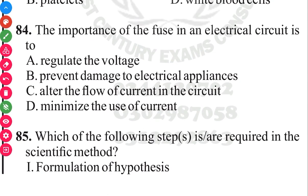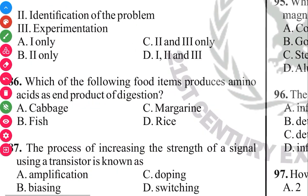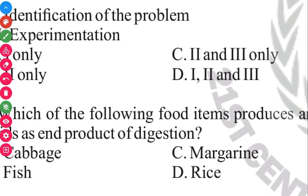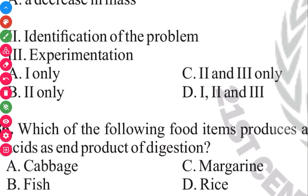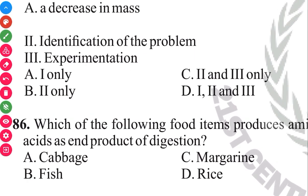Question 85. Which of the following steps are required in scientific method? Formulation of hypothesis, identification of the problem, experimentation. The answer to question 85 is D, all of them. Formulation of hypothesis, identification of problem, and then experimentation.